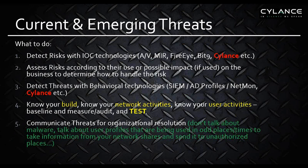IOCs — indicators of compromise — can help you identify risks. IOC technology is important. AV is important — FireEye, Mandiant, Bit9, even Cylance — indicators of compromise can help you identify risks before they become threats, or help identify risks that need to be qualified as threats. But you need to assess those risks according to their use and what impact they might have by understanding their past history of use. In order to detect threats, you really have to look at behavioral technologies — things that put together the picture of the use of systems or credentials that have been compromised in your environment.